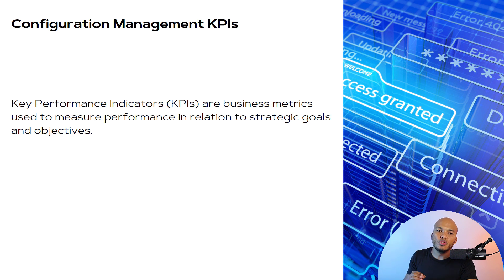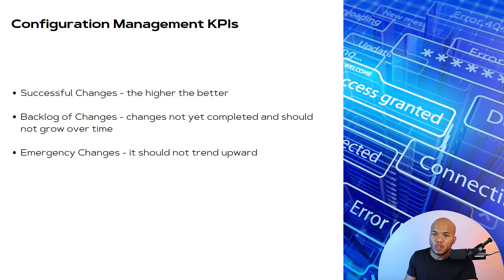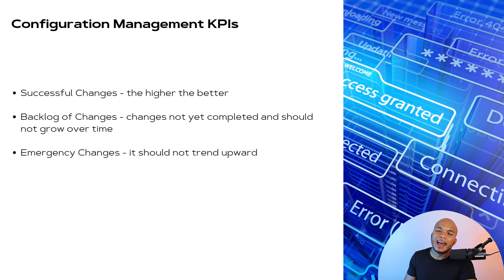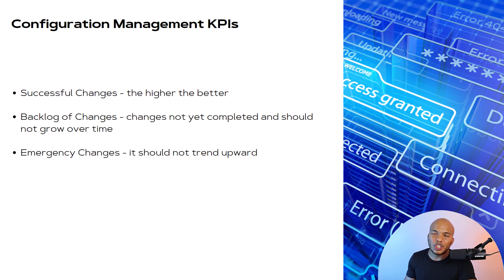In configuration management, you have KPIs — key performance indicators — which are business metrics used to measure performance in relation to strategy goals and objectives. There are three major components: successful changes (the higher, the better), a backlog of changes (changes not yet completed, which should not grow over time), and emergency changes (which should not trend upwards, because an upward trend indicates something is obviously wrong with the security setup).